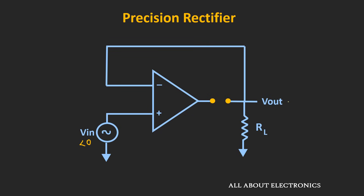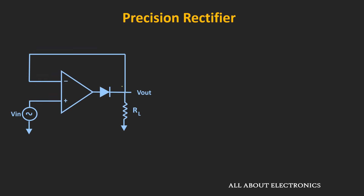And whenever the input is less than zero, the diode will get reverse biased and simply act as an open switch. So the output of this rectifier will be equal to zero volts. In this circuit, the diode behaves like an ideal diode because it is connected in the feedback loop. If we assume Vf is the voltage drop across the diode, whenever it is connected in the closed-loop configuration, the effective voltage drop gets divided by the open-loop gain of the op-amp. For example, if the drop is 0.7V and the open-loop gain is 10⁵, the effective forward voltage drop will be approximately zero. So in this closed-loop configuration, the effective forward voltage drop is 0V — that is why it behaves like an ideal diode.